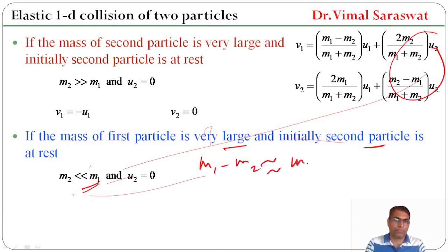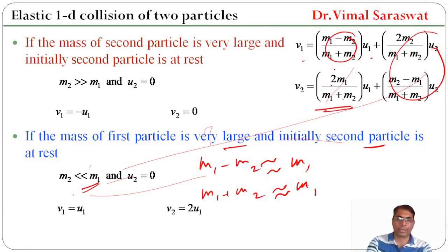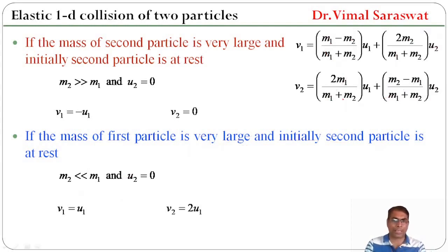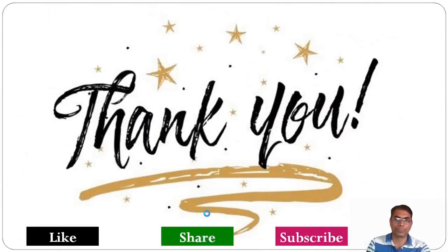So M1/M1 = 1 gives V1 = U1, and 2M1/M1 gives V2 = 2U1. This means after collision, the first particle moves with the same velocity, whereas the second particle moves with double the velocity of the first particle. So V1 = U1 and V2 = 2U1. Here we end our session. In today's session we have discussed about elastic 1D collision of two particles. Goodbye.